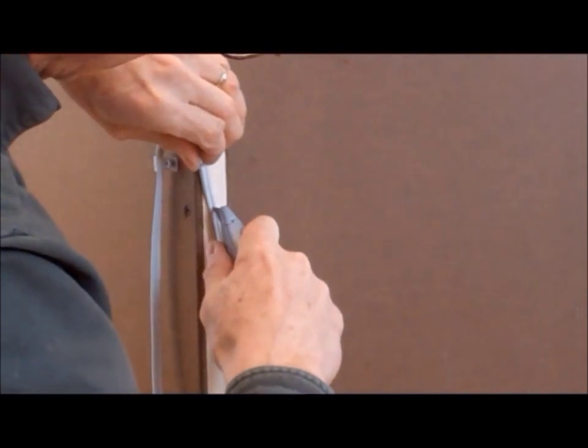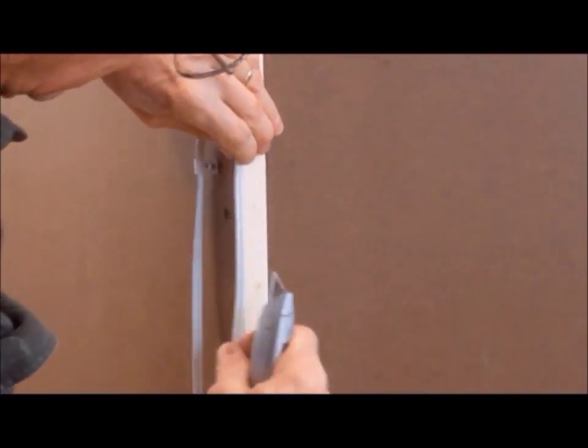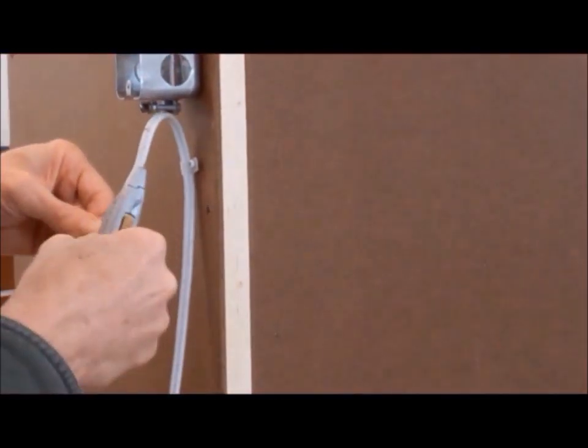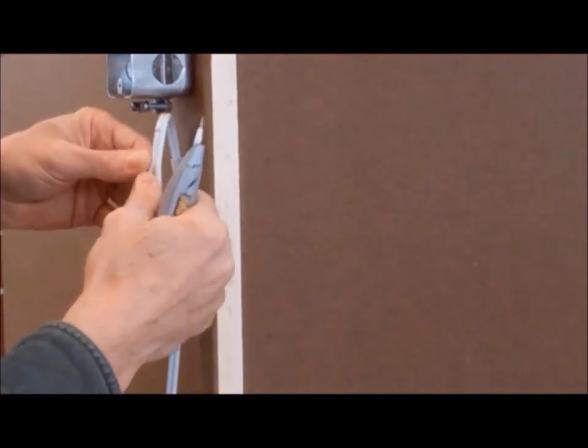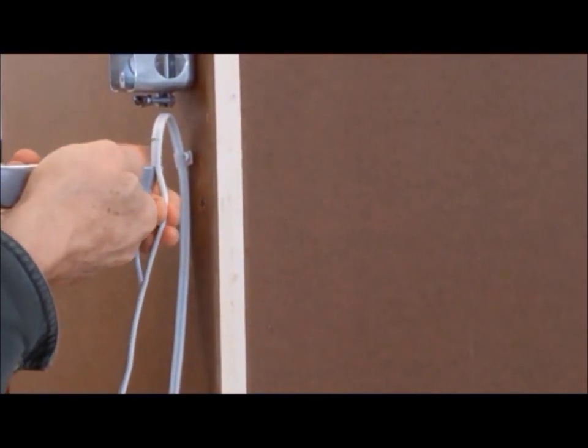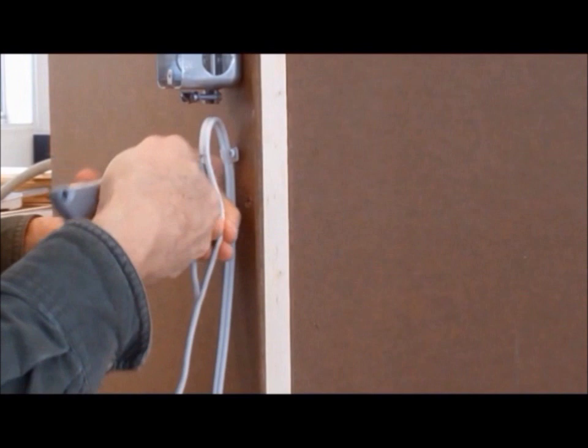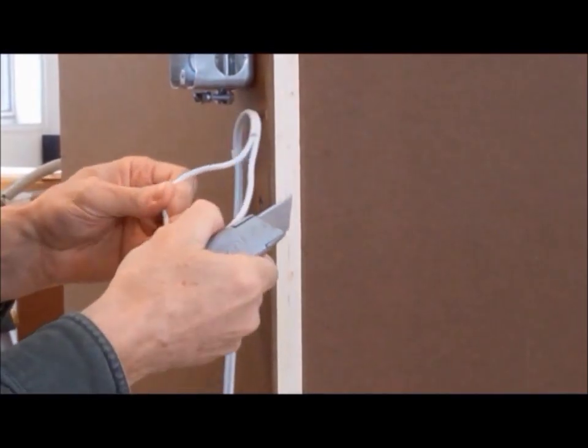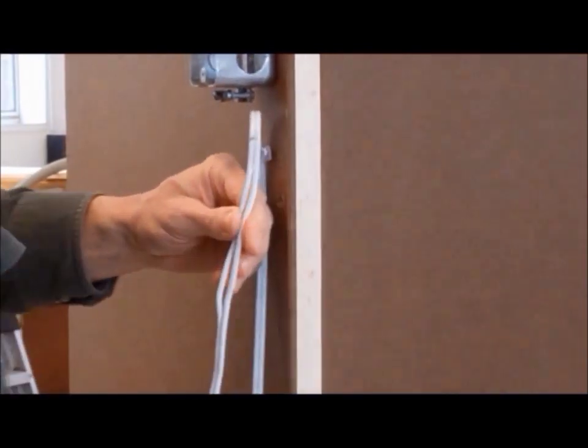We need to separate the conductors inside the junction box. With the cord looped inside the box, I have marked the section that needs to be split. Removing the wire from the box makes it easier. Be very careful not to cut into the actual copper wiring. Give yourself four or five inches to work with.